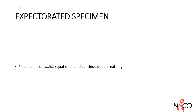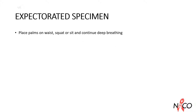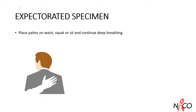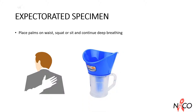They should place their palms on the waist, squat or sit and continue deep breathing again. Sitting and placing hands on the waist fixes the shoulder and pelvic muscles and brings the intercostal muscles of the ribcage and diaphragm into action. Tapping or thumping of the back may encourage expectoration. Steam inhalation may also help. Recover the sample and place in a leak-proof sterile container. Whenever possible, sputum should be collected in an open place or in a well-ventilated room meant for this purpose.